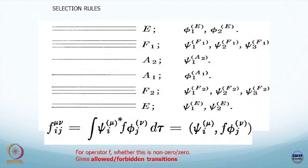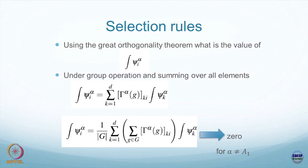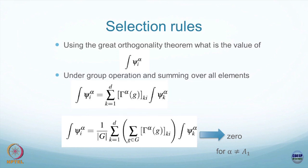If it is 0 you say that going from state phi j in EREP nu to this one triggered by this operator is not possible — that is the elaborate meaning of this expression. So for operator f, whether this is non-zero or 0 gives allowed or forbidden transitions. Now I am coming to the proof. Suppose I want to work out what this integral is. I keep it as a formal integration — it could be dx or dy — without specifying the region.